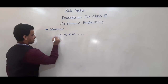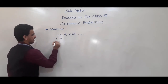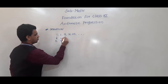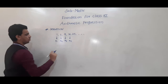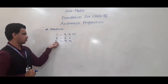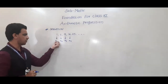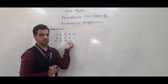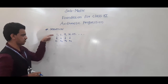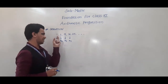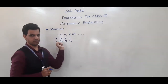These terms we denote as a1, a2, a3, a4 and so on. This subscript denotes 1, 2, 3, 4 — that is the place of the term. So, a1 means it is the first term, a2 is the second term, a3 is the third term, a4 is the fourth term.